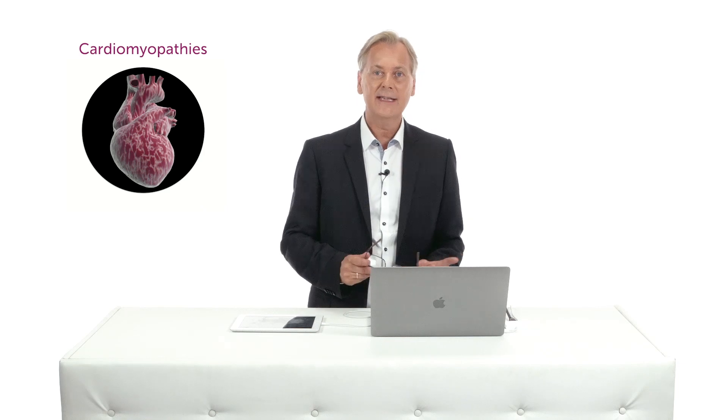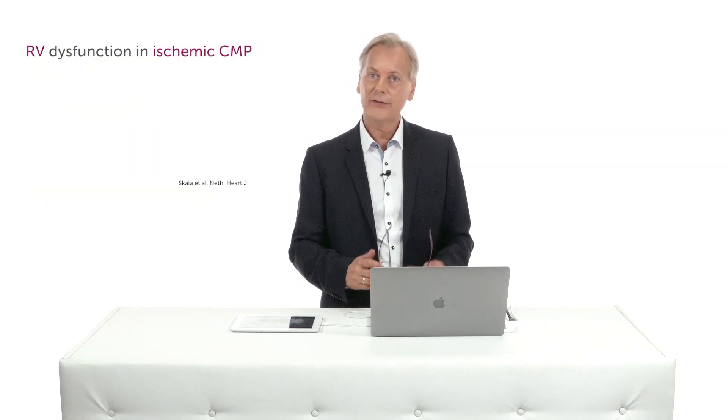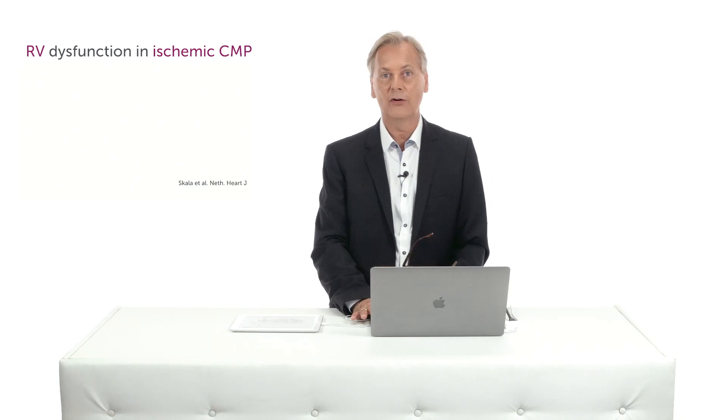In the specific case of an ischemic cardiomyopathy, there are several reasons why the right ventricle can be involved. First of all, if there's an infarct of the septum, remember the septum also supplies parts of the right ventricle. So if you have an infarct there, it will also affect right ventricle function.